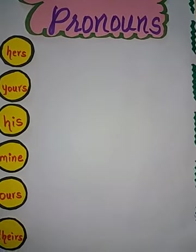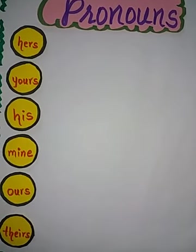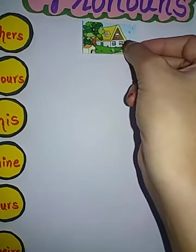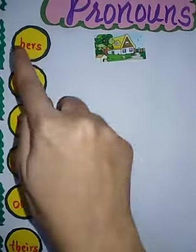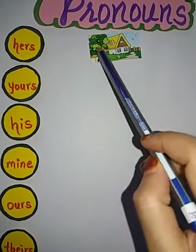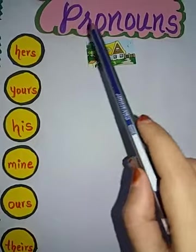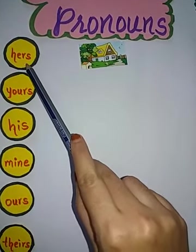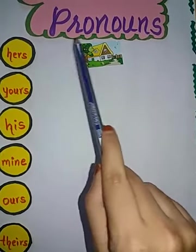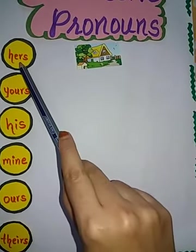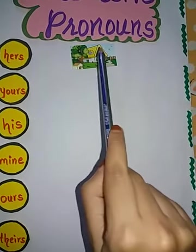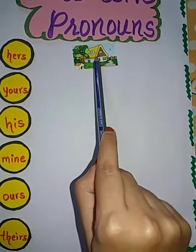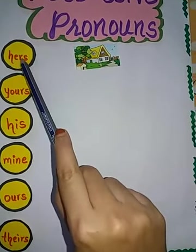Now let us see the first example sentence of hers. That house is hers. Hers is a possessive pronoun because this pronoun tells us that this house belongs to her — it shows the ownership of the house. To whom does this house belong? It belongs to hers.